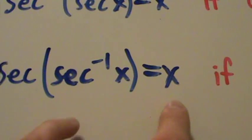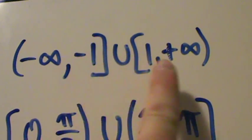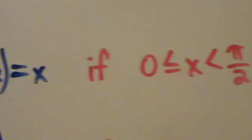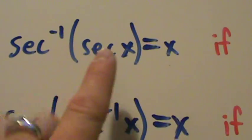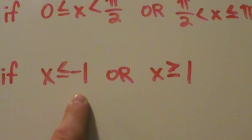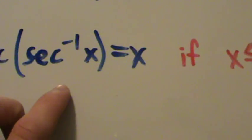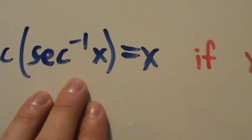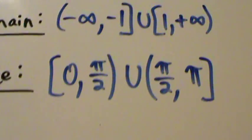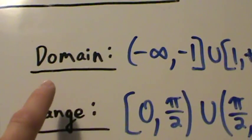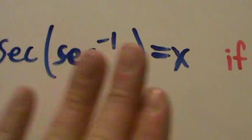Now if we have the secant of the inverse secant of x, that equals x provided x is less than or equal to negative one, or x is greater than or equal to positive one — basically if x is in the domain of the inverse secant. For the first cancellation property, if x is not in those intervals, we'll talk about that in a later video. For the second one, if x is between negative one and one, then x is not in the domain of the inverse secant function, so it doesn't even make sense — there's no solution, it doesn't exist.